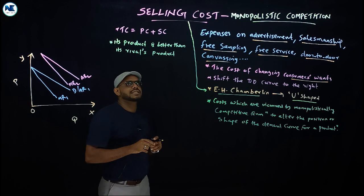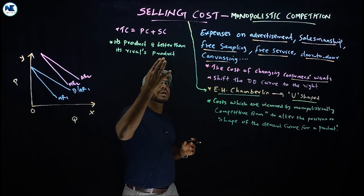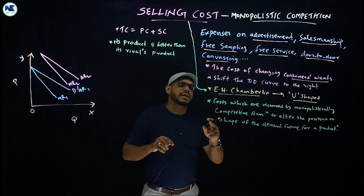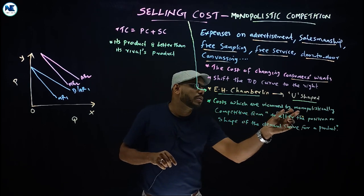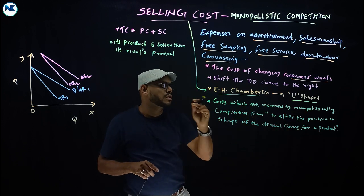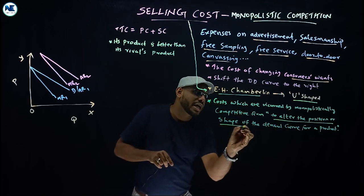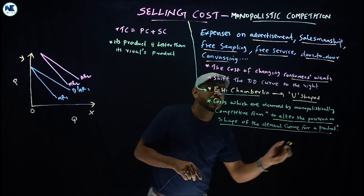Another thing is a good definition given by E.H. Chamberlain: selling costs are costs which are incurred by monopolistically competitive firms to alter the position or shape of the demand curve for a product.